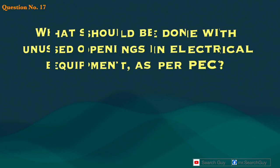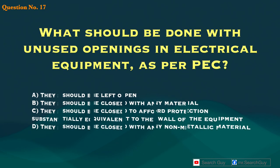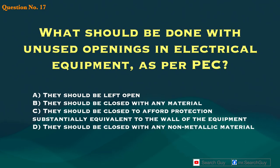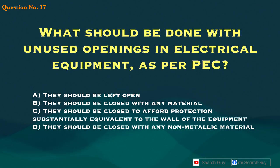Question 17. What should be done with unused openings in electrical equipment as per PEC? A. They should be left open. B. They should be closed with any material. C. They should be closed to afford protection substantially equivalent to the wall of the equipment. D. They should be closed with any non-metallic material.